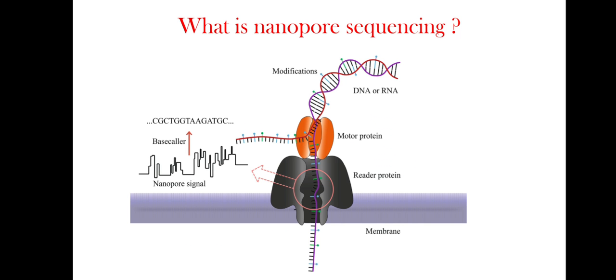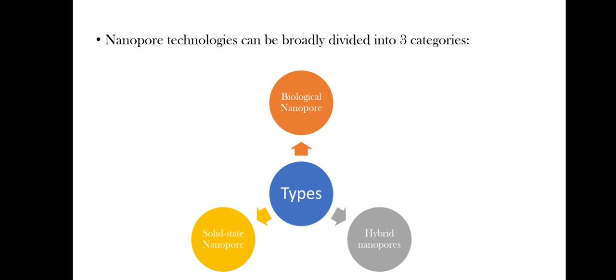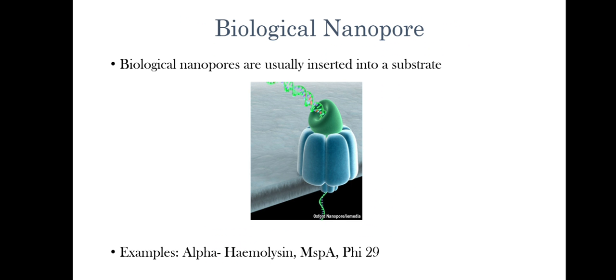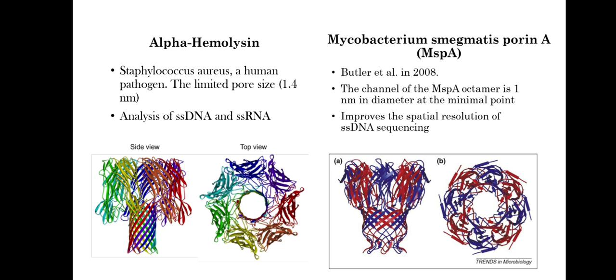Nanopore technologies can be broadly divided into three: biological nanopore, solid-state nanopore, and the most recently discovered hybrid nanopore. Biological nanopores, also known as transmembrane protein channels, are formed by insertion of protein into a substrate such as planar lipid bilayer, liposomes, or other polymer films. Examples include alpha-hemolysin, MspA, and Phi29. Alpha-hemolysin is an exotoxin secreted by the bacterium Staphylococcus aureus. It is a human pathogen and has a mushroom-shaped heptameric protein. Since it has a limited pore size of 1.4 nanometers, its application is restricted to analysis of single-stranded DNA and RNA.